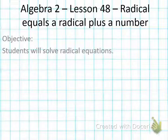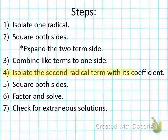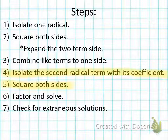So today, if you look at your steps — I asked you to write up there — there's a new step four and step five. If you're on the video, make sure you pause and write this in your notes. Step four and step five are the new ones: isolate the second radical term with its coefficient, because we have two radicals; and then step five, square both sides.